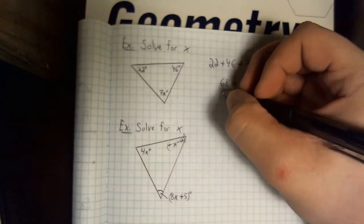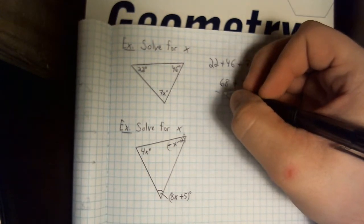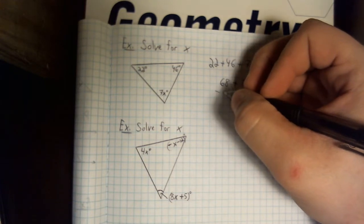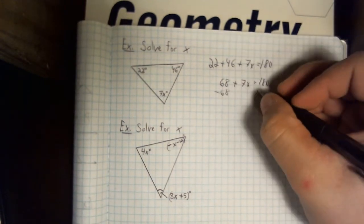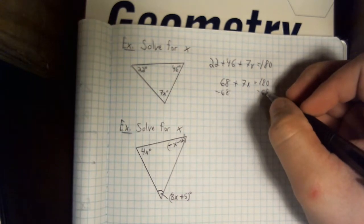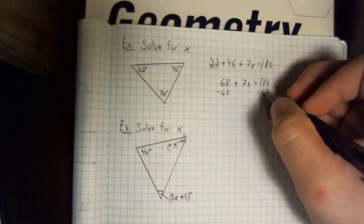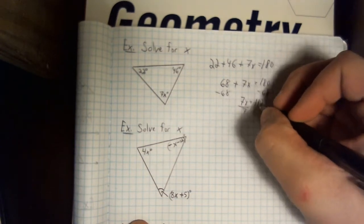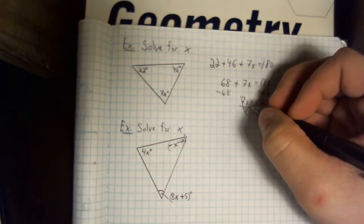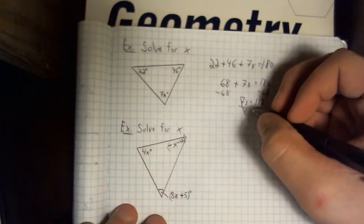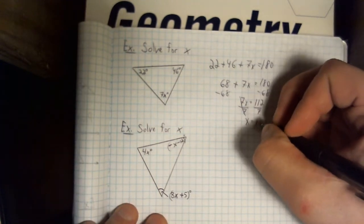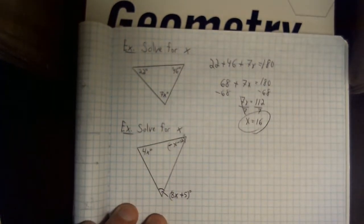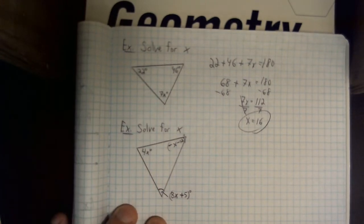Now, we have to get rid of this 68. Let's see. If we do 180 minus 68, we come up with 112. And if we divide by 7, we will get 16 as an answer. Hopefully, that's what you came up with.